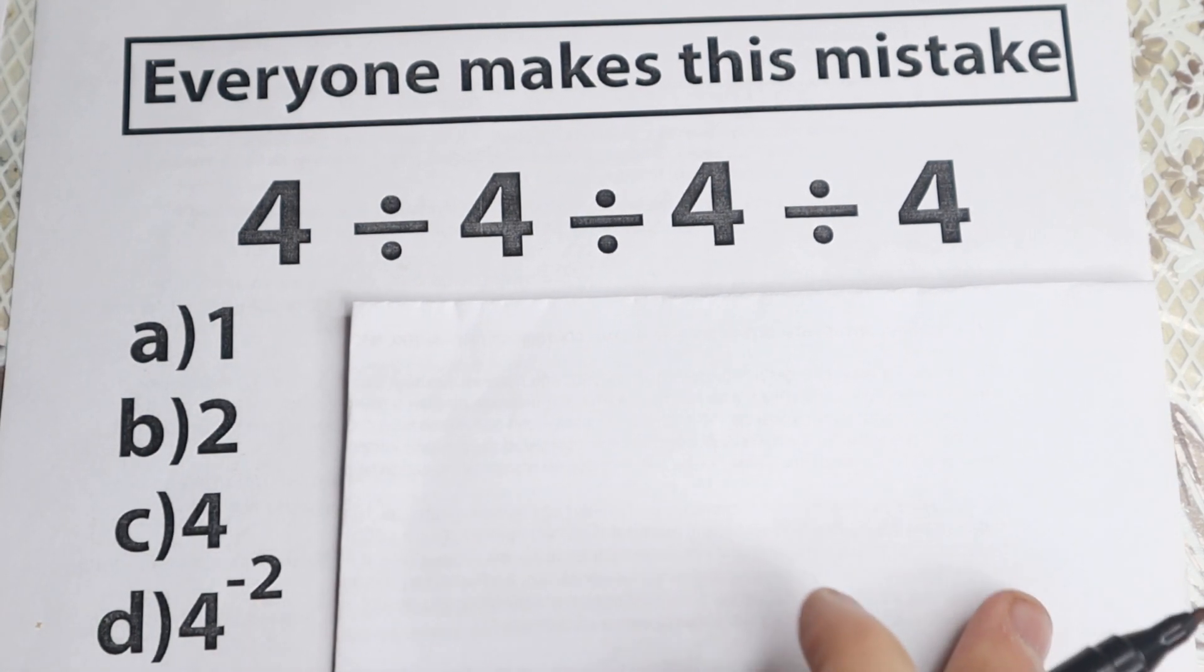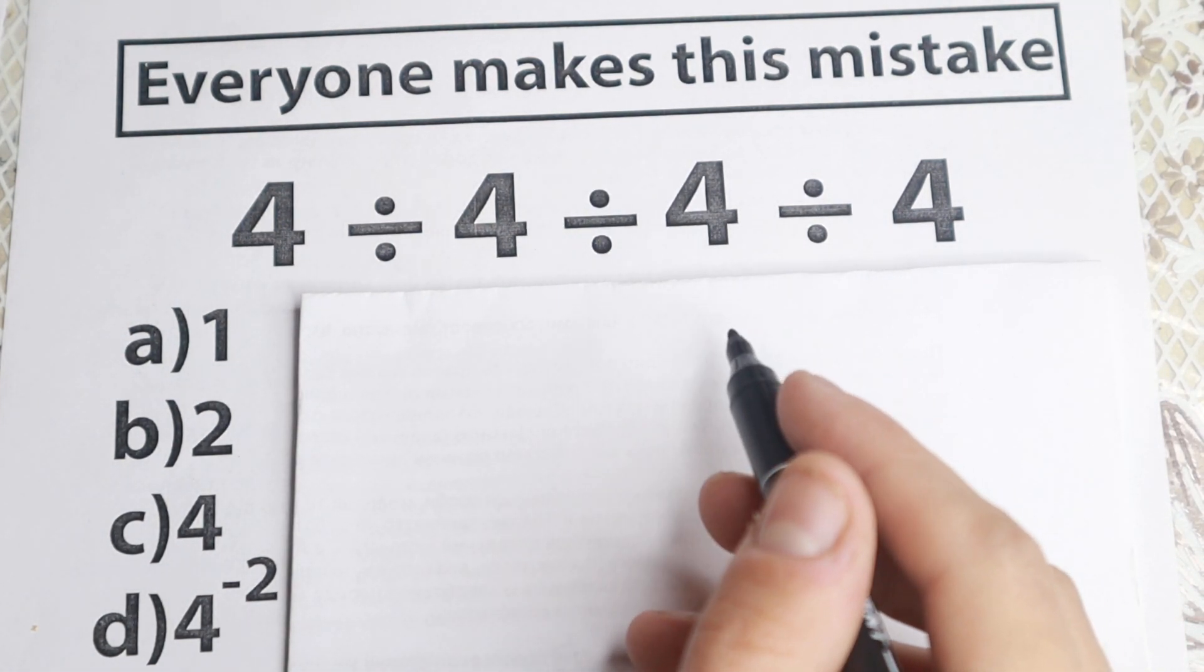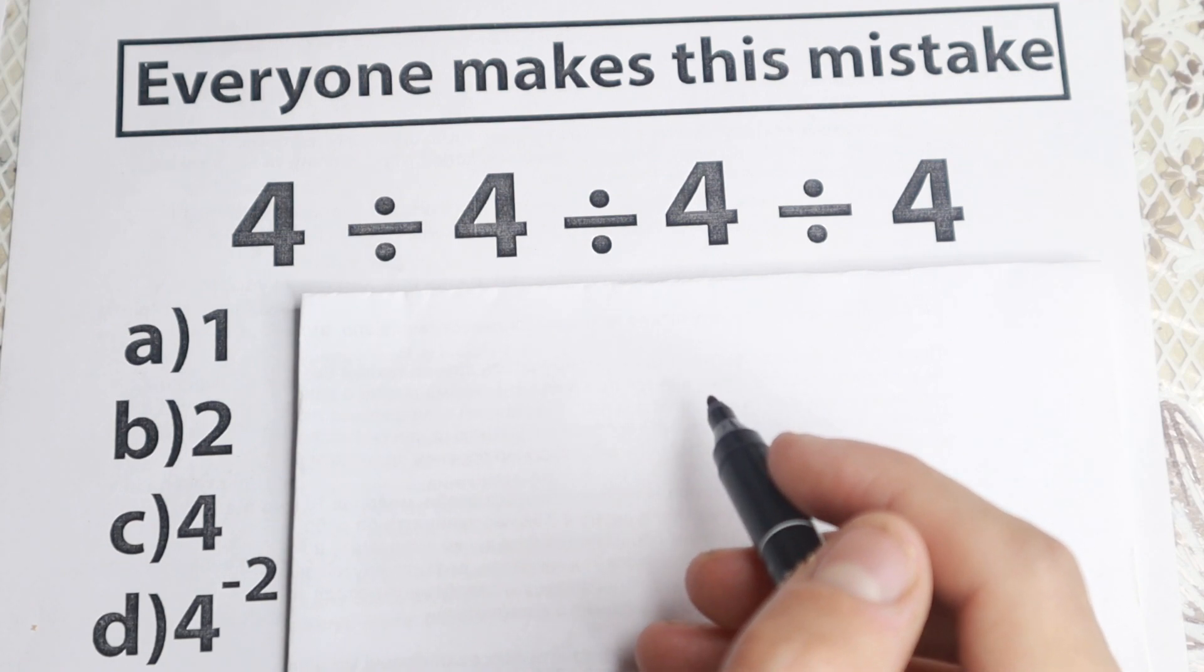So here is the problem. We have 4 divided by 4 divided by 4 and divided by 4. So a very simple problem, no squares, no parentheses right here, but a lot of students do this common mistake.